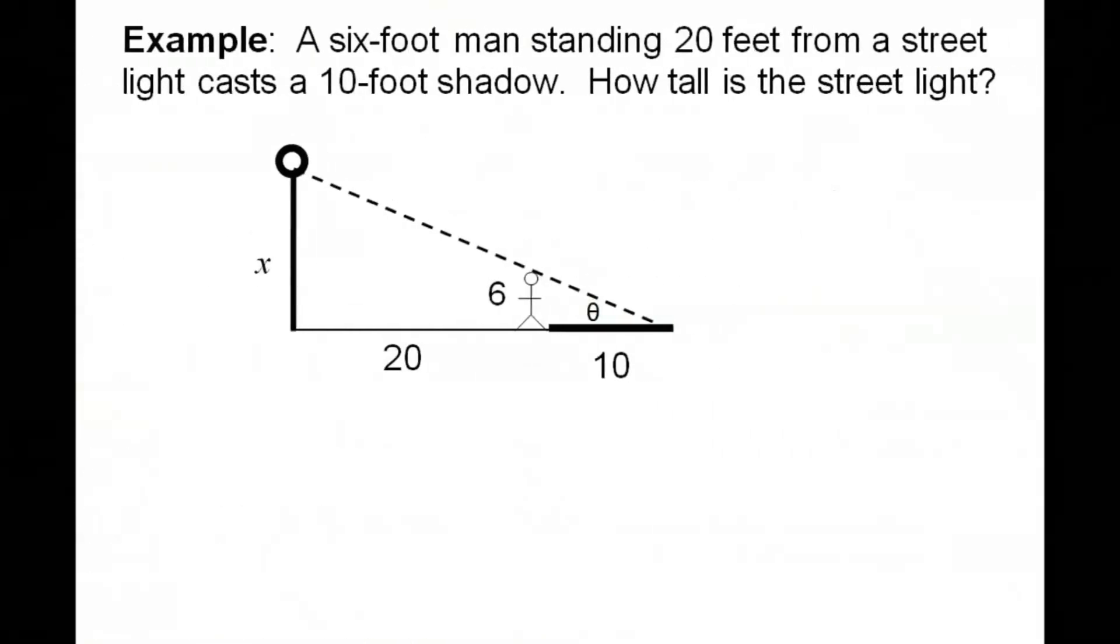Okay, here's our last problem. A six-foot man standing 20 feet from a street light casts a 10-foot shadow. How tall is the street light? Okay, I've got the picture drawn, and this is going to be important that I have a six-foot man standing in the same light as that lamp. Because what's true is that the angle that is made with the man is the same angle as with the street light.